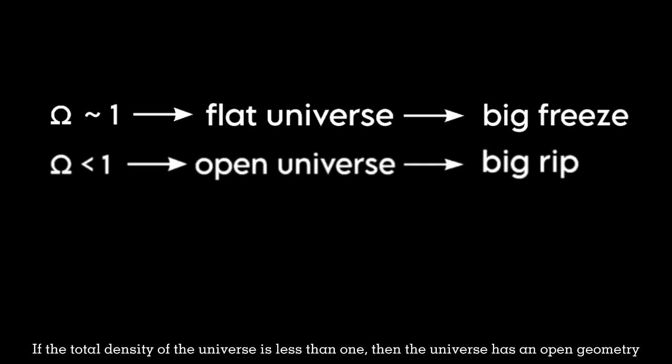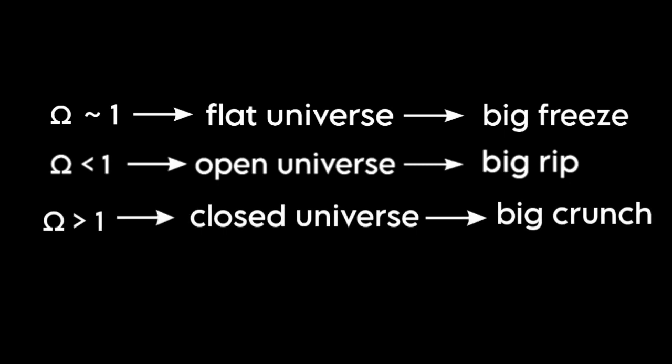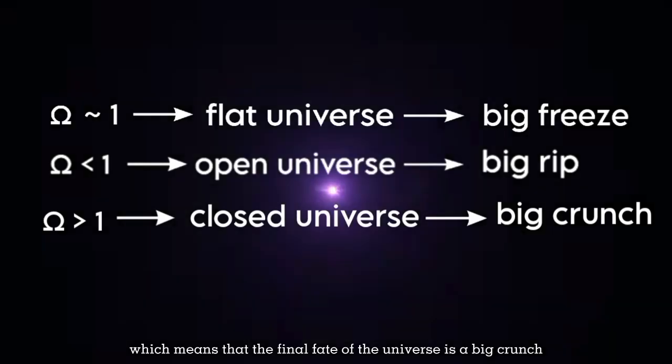If the total density of the universe is less than 1, then the universe has an open geometry, which means that the final fate of the universe is a big rip. If the total density of the universe is greater than 1, then the universe will have a closed geometry, which means that the final fate of the universe is a big crunch.